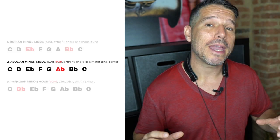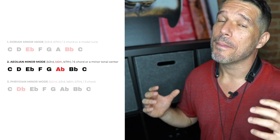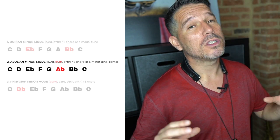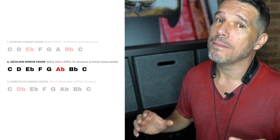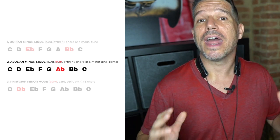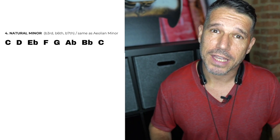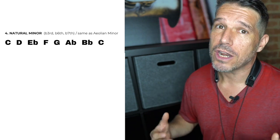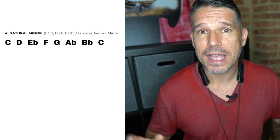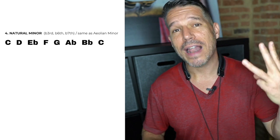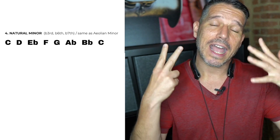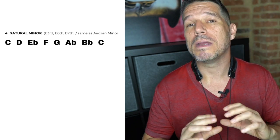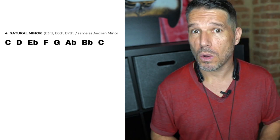Those were the three minor modes. Now let's move on to what I call the scale types, which are all based around the Aeolian mode. Most people don't call it the Aeolian mode — they call it the natural minor scale. The natural minor scale and the Aeolian minor mode are the exact same thing: flat third, flat sixth, and flat seventh. You're going to hear people refer to this as natural minor way more than Aeolian minor.